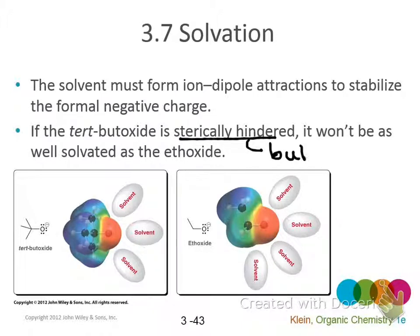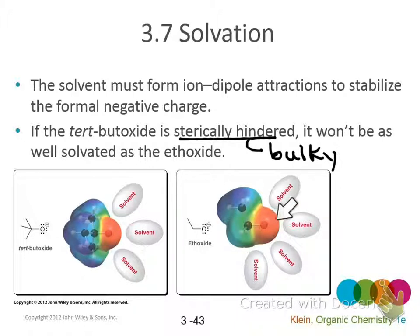Sterically hindered means the approach to the molecule or part of the molecule is blocked by other parts of the molecule. We also say the term 'bulky'. Bulky implies crowded. The hydrogens that are out here keep the solvent from efficiently packing around the negative charge and stabilizing it. On the other hand, in the ethoxide ion, it has some bulkiness but the charge is more accessible. Some really dramatic examples happen when you look at water versus other solvents.